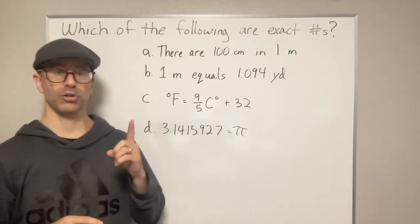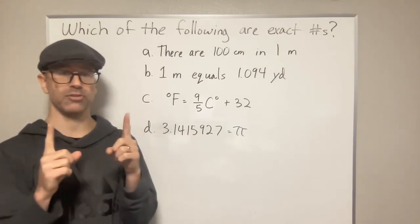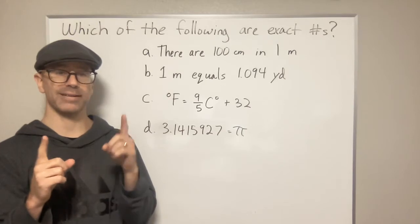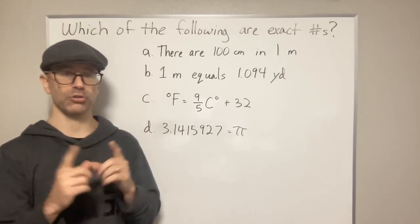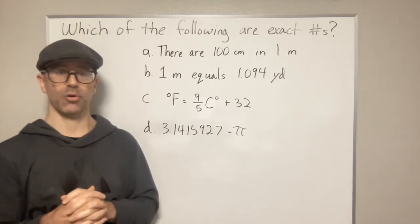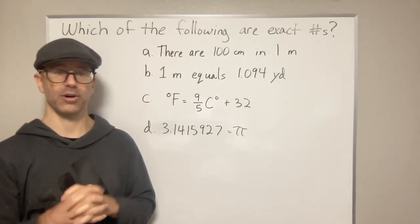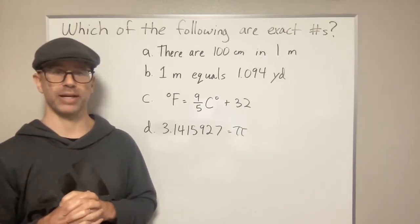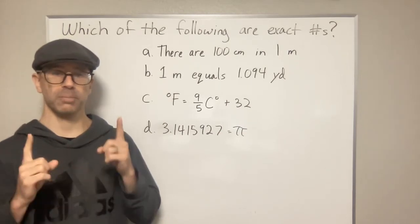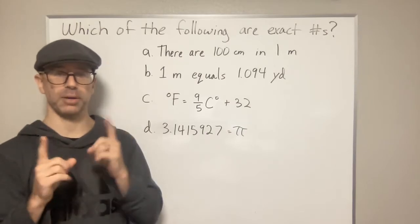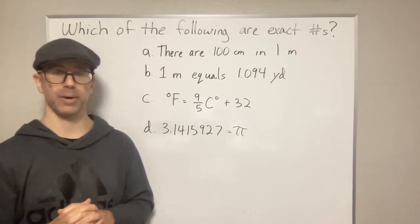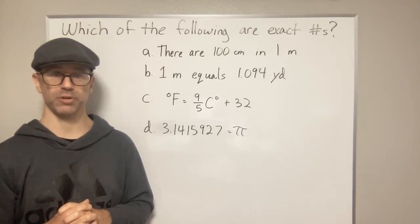So again, if you're looking at metric to metric units in the same category like length to length or volume to volume, then they're going to be exact relationships and true by definition. If you're comparing a unit of English system to metric system, that's going to be a measure and you're going to have to pay attention to the number of sig figs.